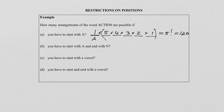Let's now move to Part B. We still use the letters from the word ACTION, but now they say the word has to start with an A and end with an N. So they restrict the first position as well as the last position. Let's draw our six lines to represent the six positions. The first position is restricted to the letter A, and the last position — position six — is restricted to the letter N, but there are no restrictions in between. The first position can only be done one way, and the last position can only be done one way, because it must be an N.